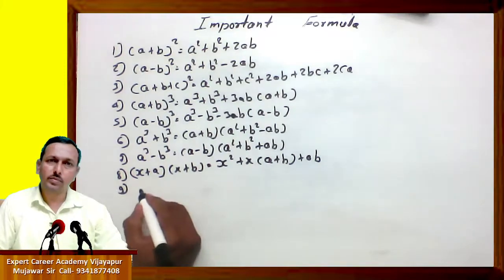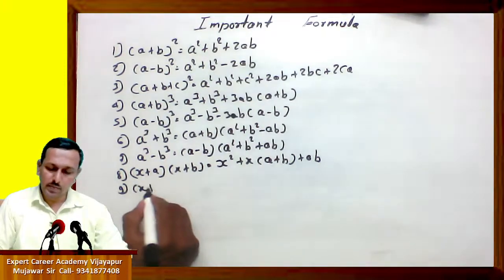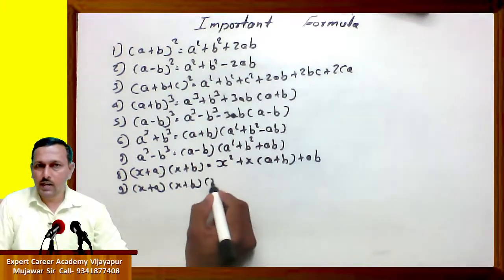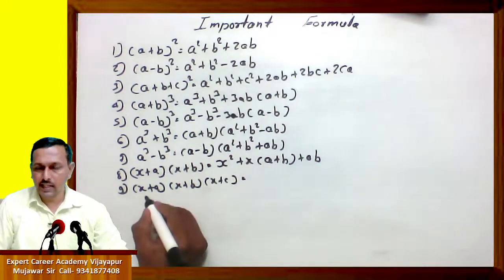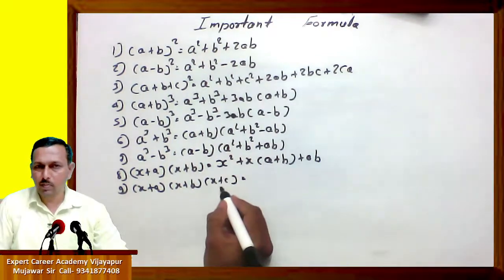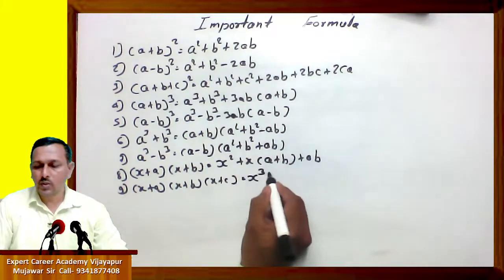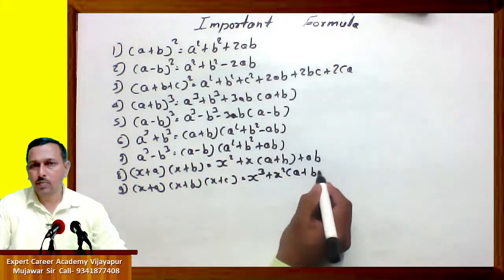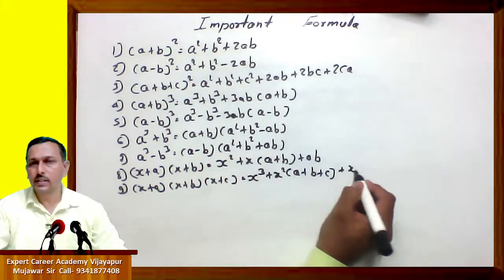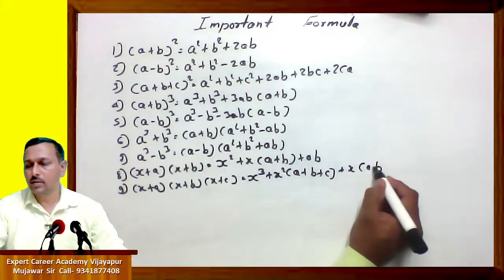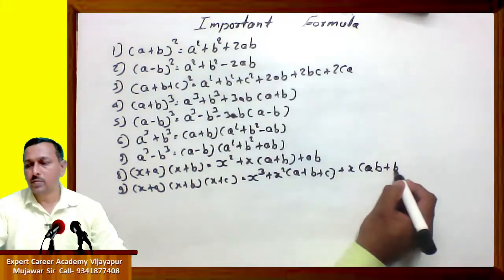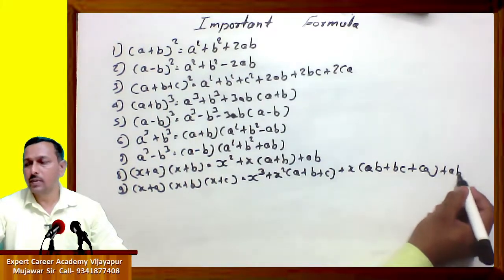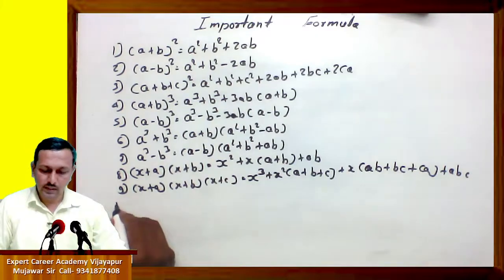Ninth one: (x plus a) into (x plus b) into (x plus c) equals x cube plus x square into (a plus b plus c) plus x into (ab plus bc plus ca) plus abc.